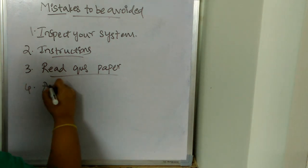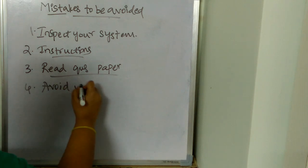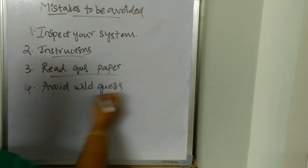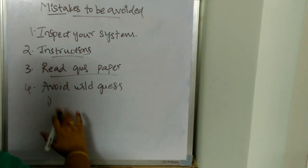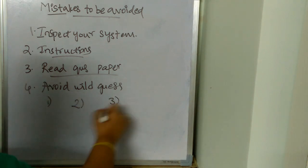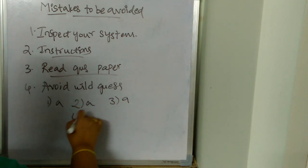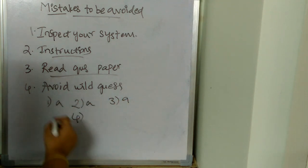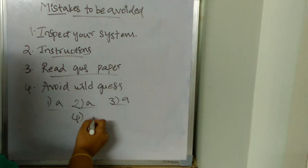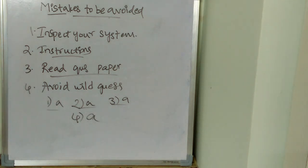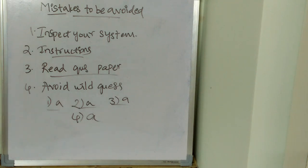Next: avoid wild guesses. For example, if your first three answers happened to be option A, do not assume the fourth answer is also A. That kind of wild guessing should not be done. Read every question twice — if you don't understand, read it again. Some questions are tricky and you need to read them at least twice.